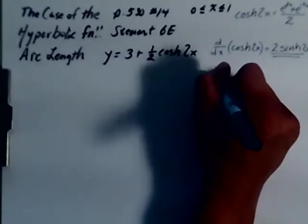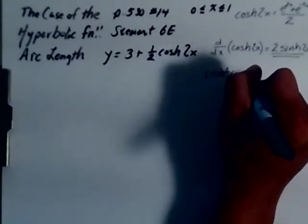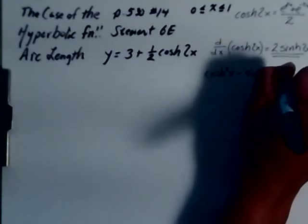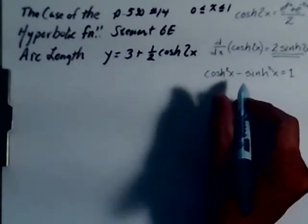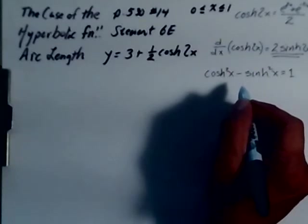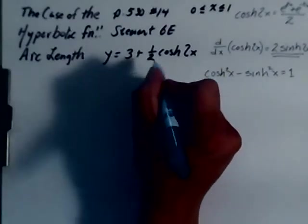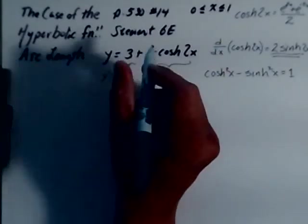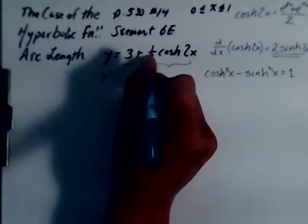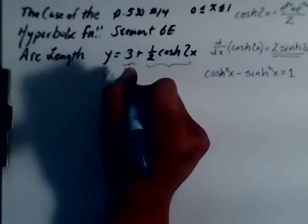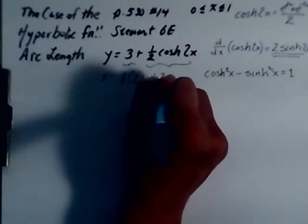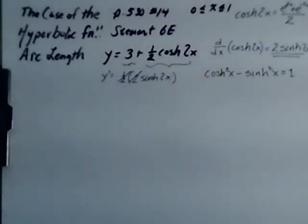We also know that hyperbolic cosine squared of x minus hyperbolic sine squared of x is equal to 1. And we have to figure out what the derivative of this is now. So y prime is equal to the derivative of a constant of 0. The derivative of one-half hyperbolic cosine of 2x is equal to one-half times 2 hyperbolic sine of 2x. These twos cancel. It goes away.